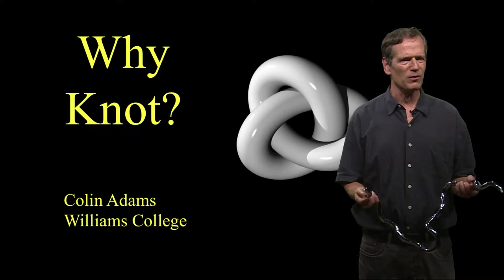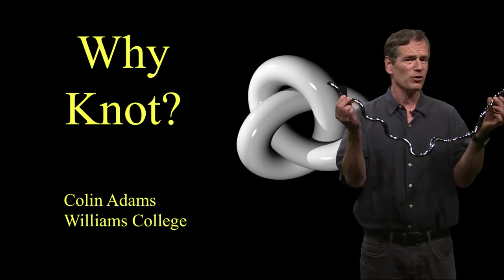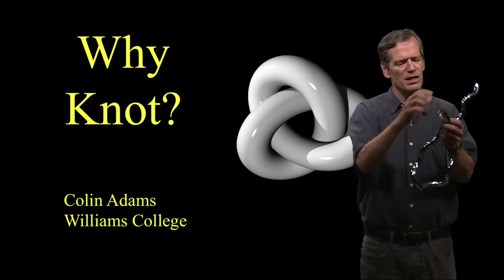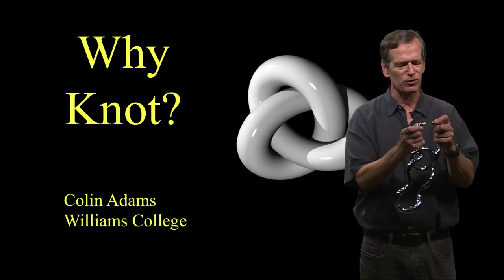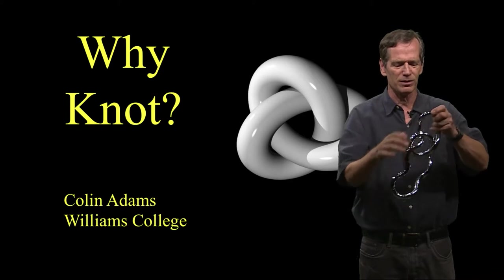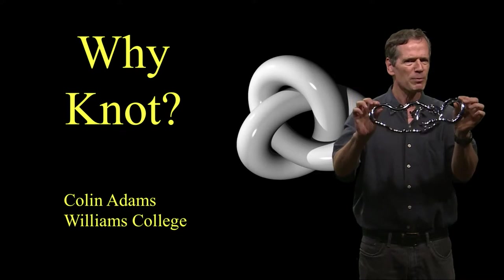Now in the mathematical theory of knots, what we do is we take a string. I'm going to use this toy to demonstrate, and we tie a knot in the string, but the important point is that we glue the two loose ends of the string together, in this case snap the toy closed, to trap a knot on the string.